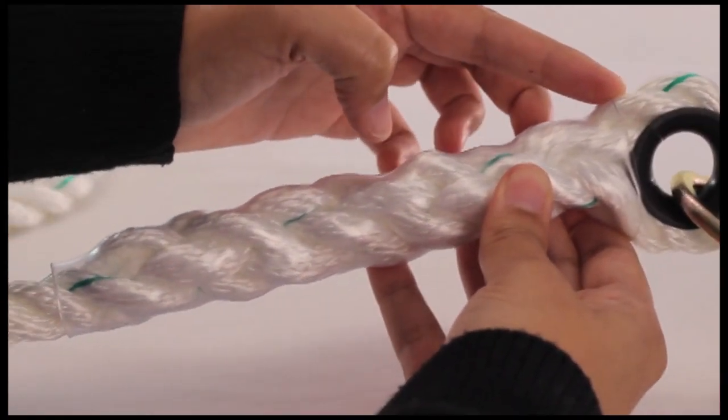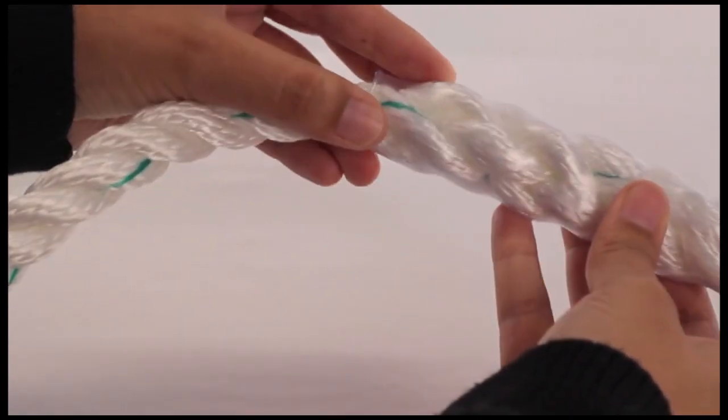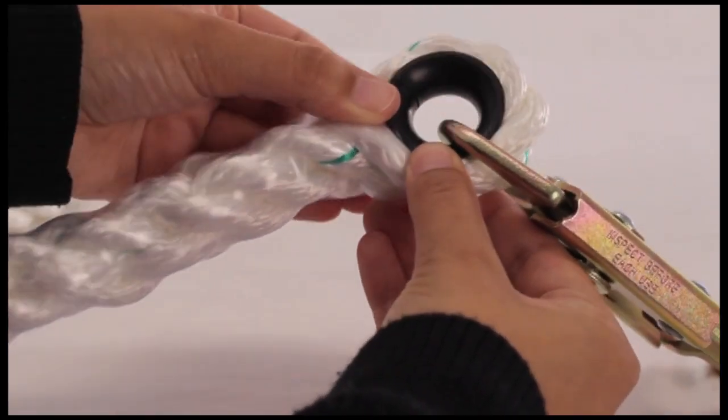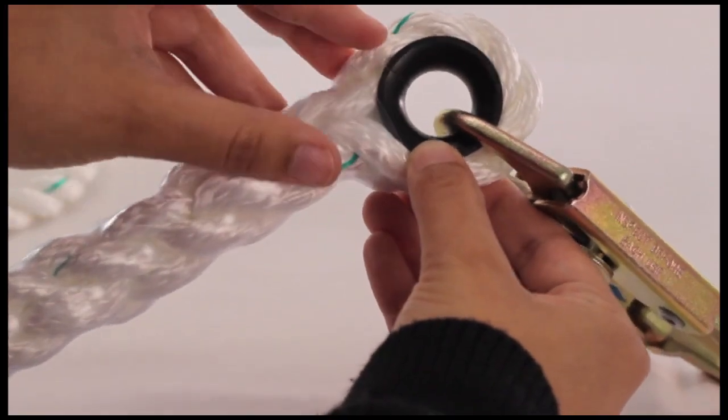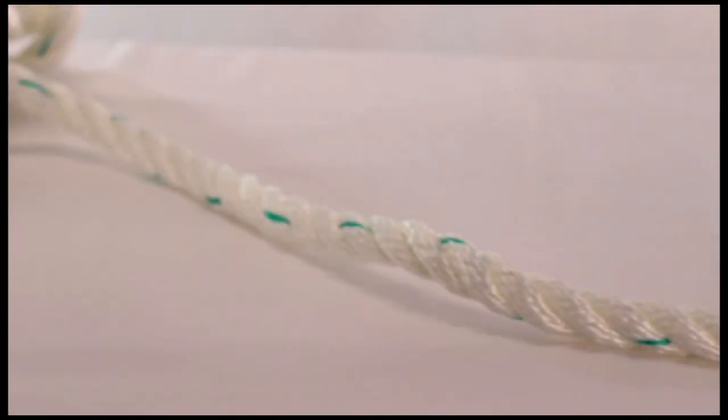Excessive soiling, paint, and rust should not be present. Check for discoloration, brittle areas, splinters, or slivers on the rope surface. These defects indicate chemical, heat, or ultraviolet damage and reduce rope strength.